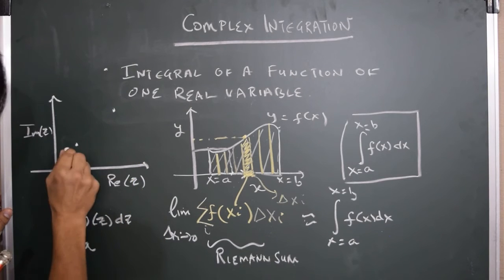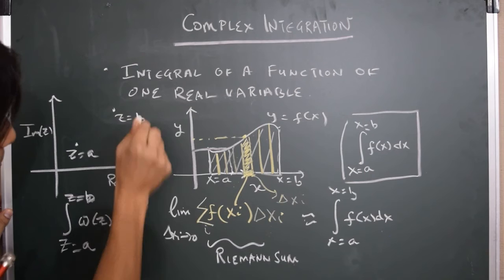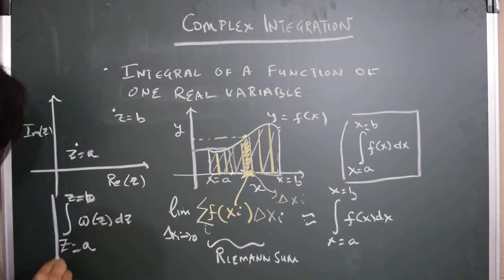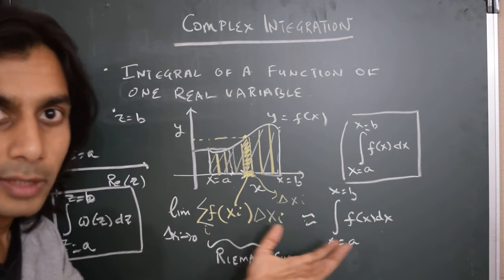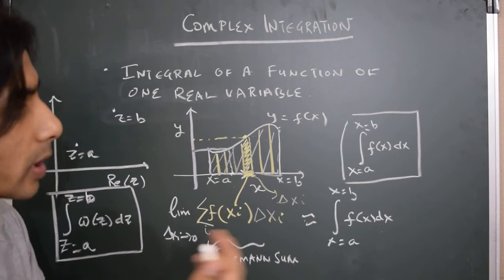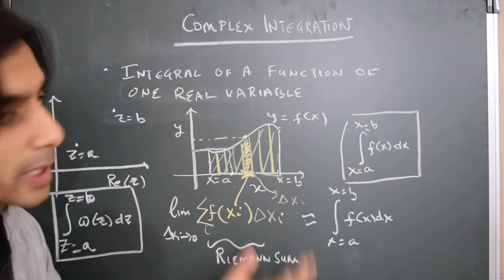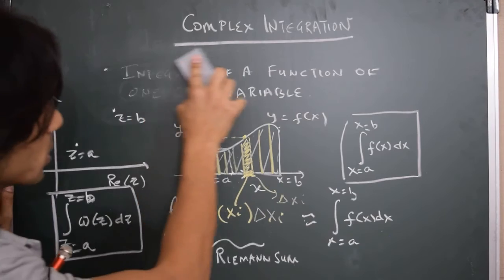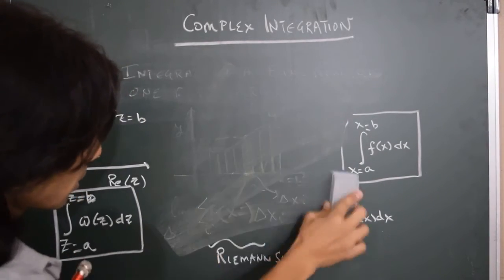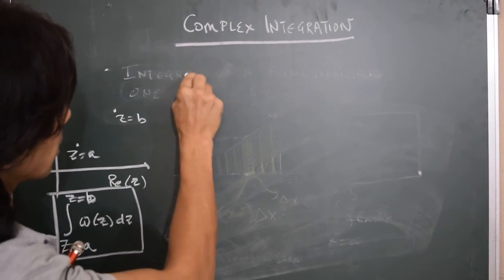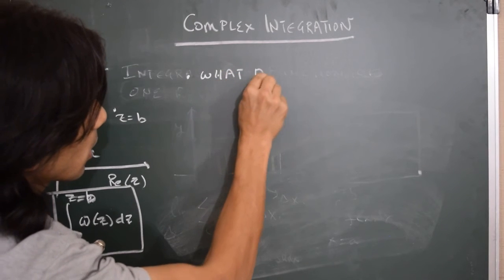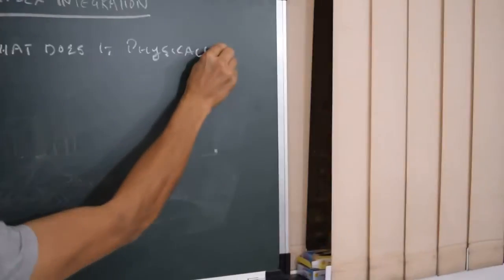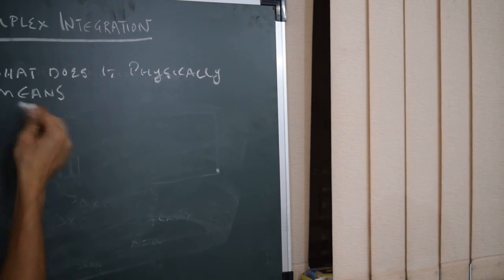A few questions immediately arise. Let's say this is z equals a and this is z equals b. First and foremost, one question is: what is the meaning of this quantity — what is it that we are evaluating here? The meaning in the case of a function of one real variable is quite clear, which is approximating the area under the curve. But in the complex plane, what does this symbol really mean? That's one of the most important questions: what does it physically mean to evaluate the integral of a complex function?